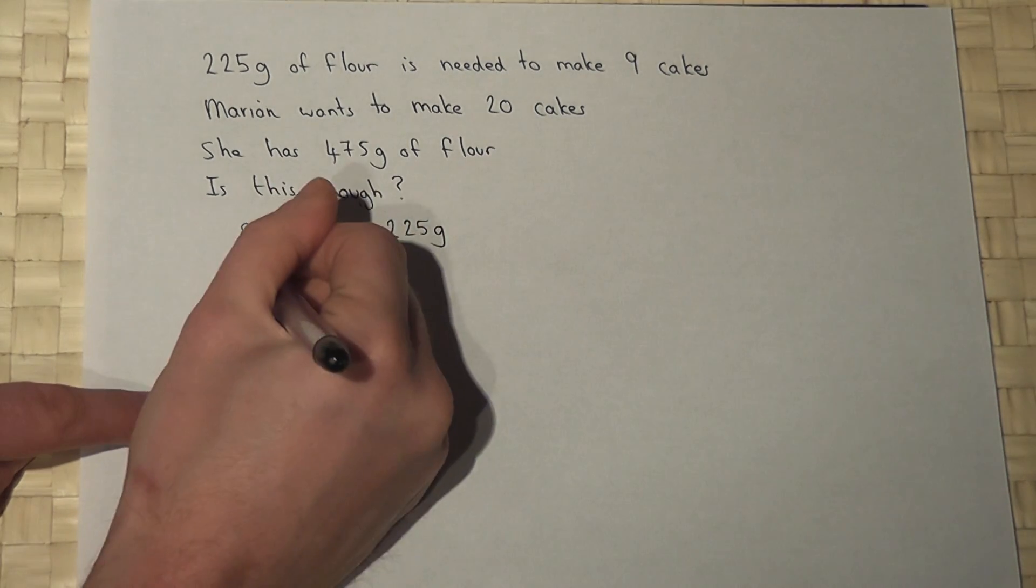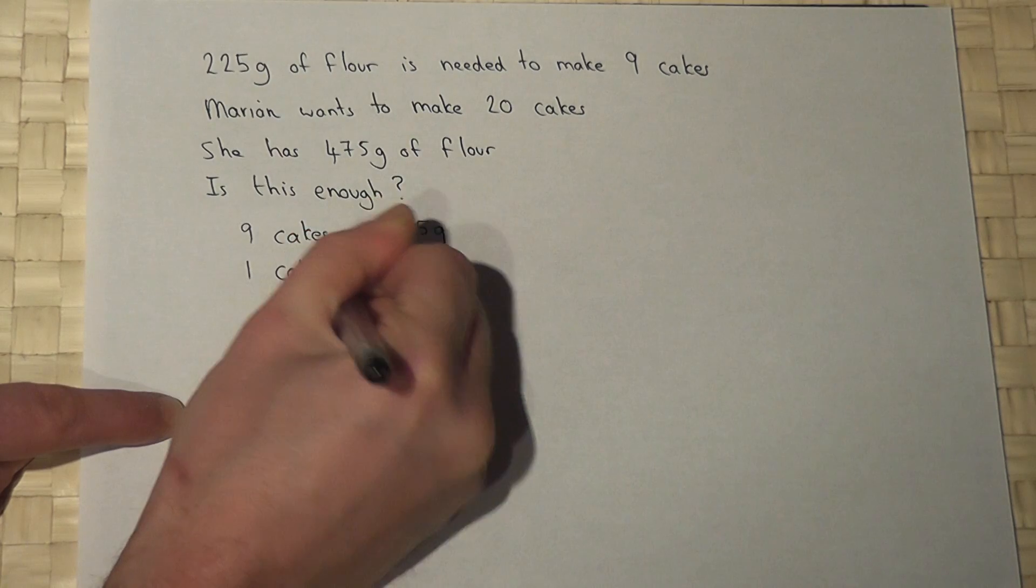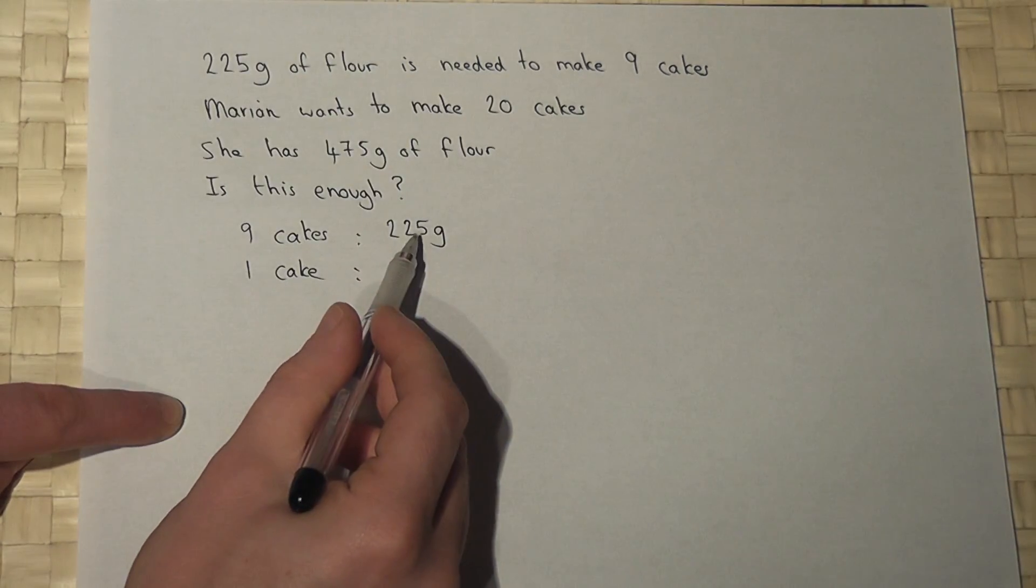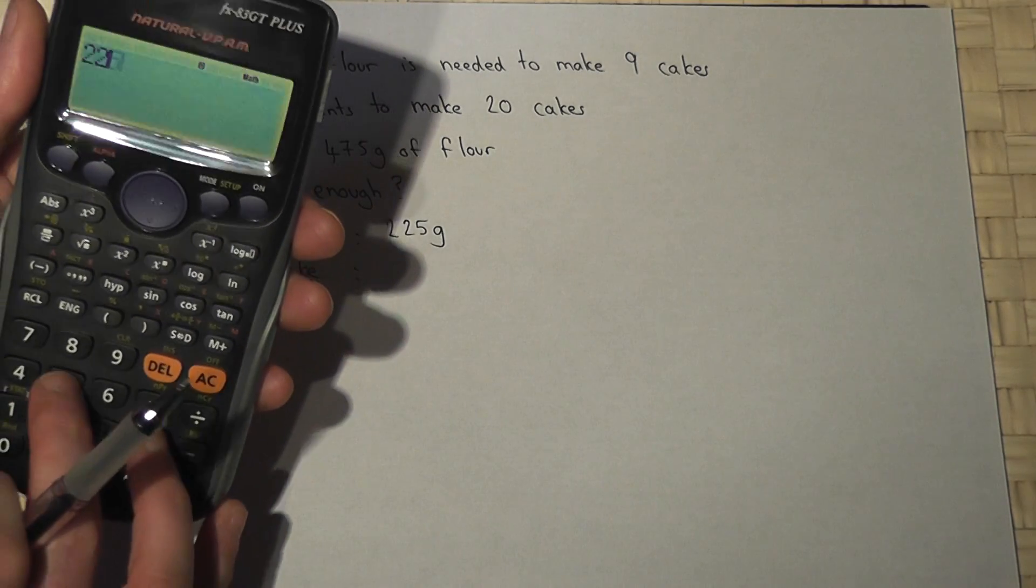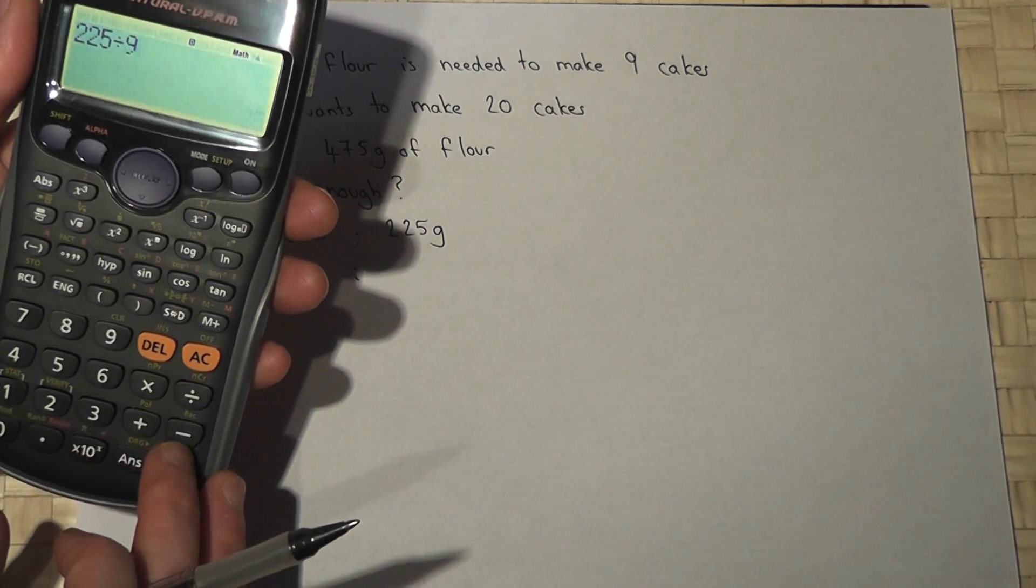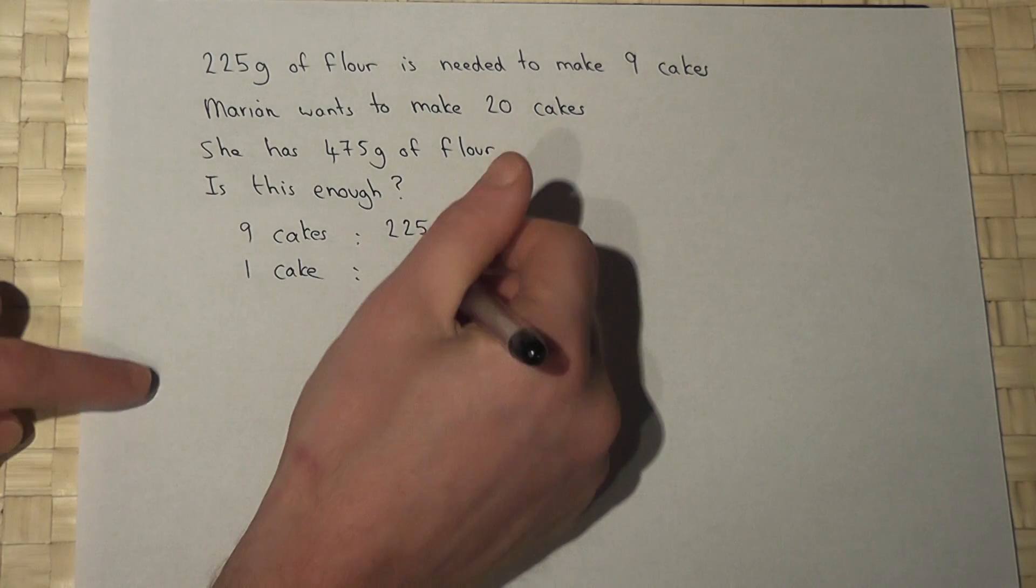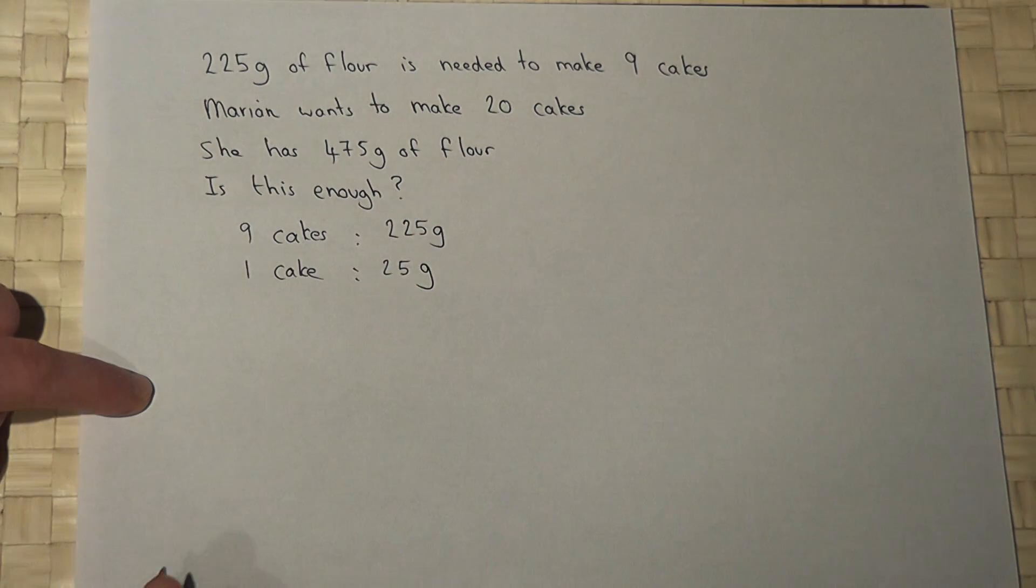So I can work out how much one cake requires by doing 225 divided by 9. So 225 divided by 9 works out at 25 grams of flour per cake.